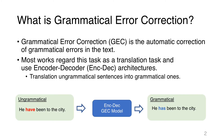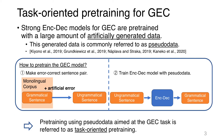Grammatical Error Correction (GEC) is the automatic correction of grammatical errors in text. Most works regard this task as a translation task and use encoder-decoder architectures to convert ungrammatical sentences to grammatical ones. Stronger encoder-decoder models for GEC are pre-trained with a large amount of artificially generated data, commonly referred to as pseudo-data.